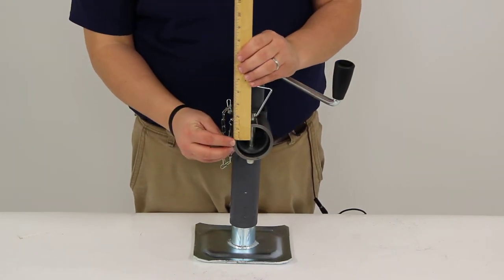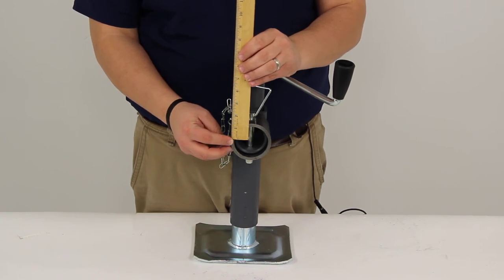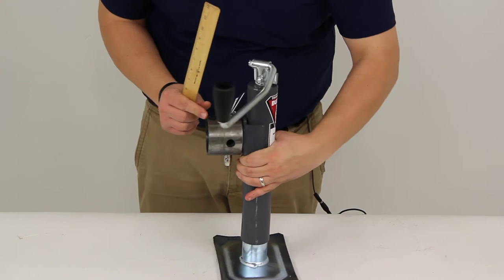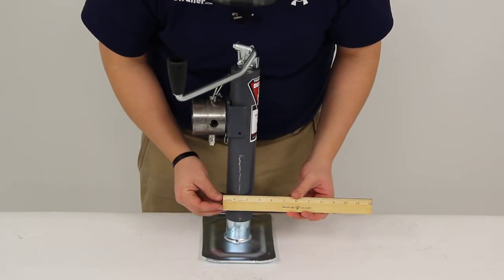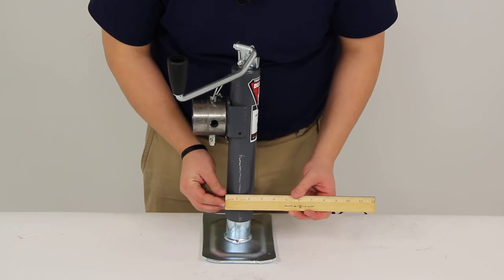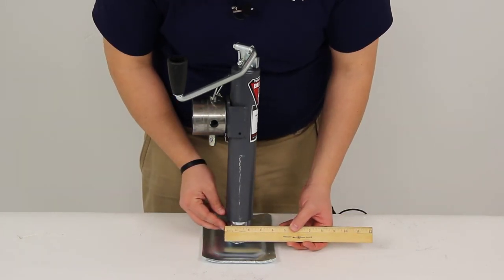From the center of our mounting bracket to the top of our jack we have a clearance of 4.5 inches. Our outer tubing gives us a diameter of 2.25 inches and our inner tubing gives us a diameter of right at 2 inches.